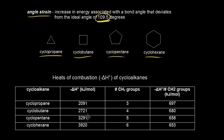If you analyze these, the bond angle in the triangle must be 60 degrees. And 60 degrees is a long ways off from 109.5 degrees, meaning cyclopropane has significant angle strain. For cyclobutane, this angle would be 90 degrees. And 90 degrees is still a ways off from 109.5 degrees, so cyclobutane also has a large amount of angle strain, although not as much as cyclopropane.